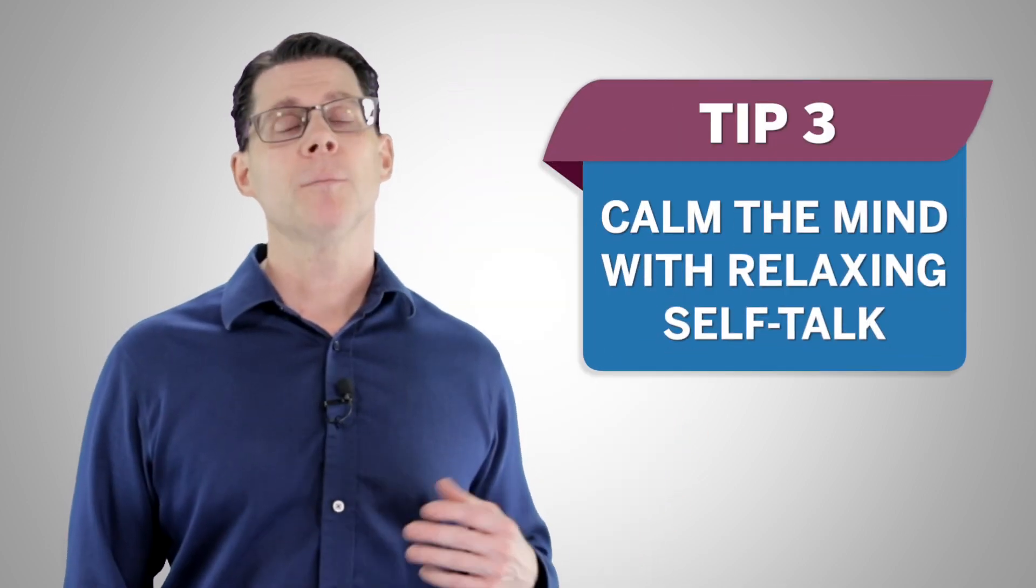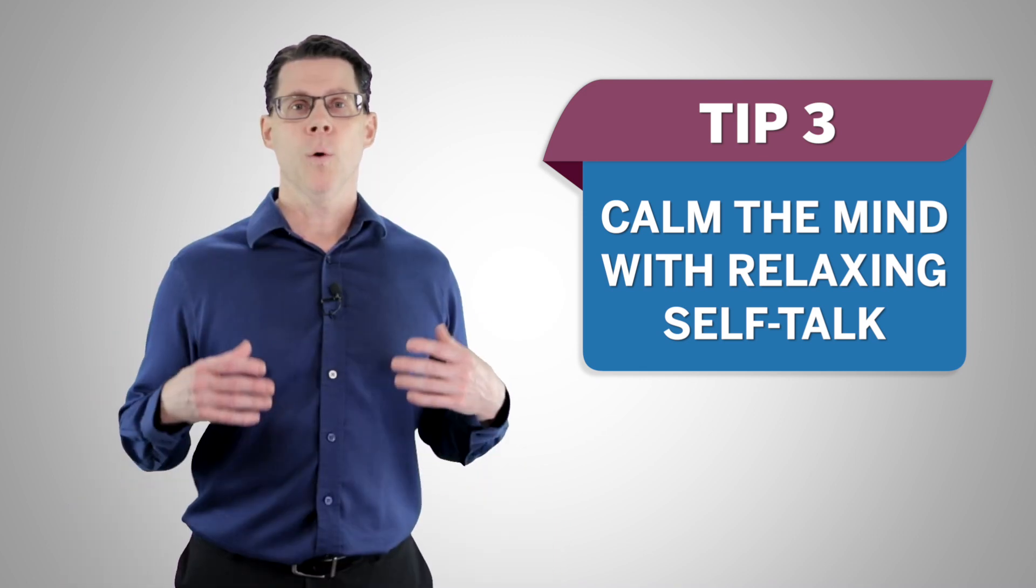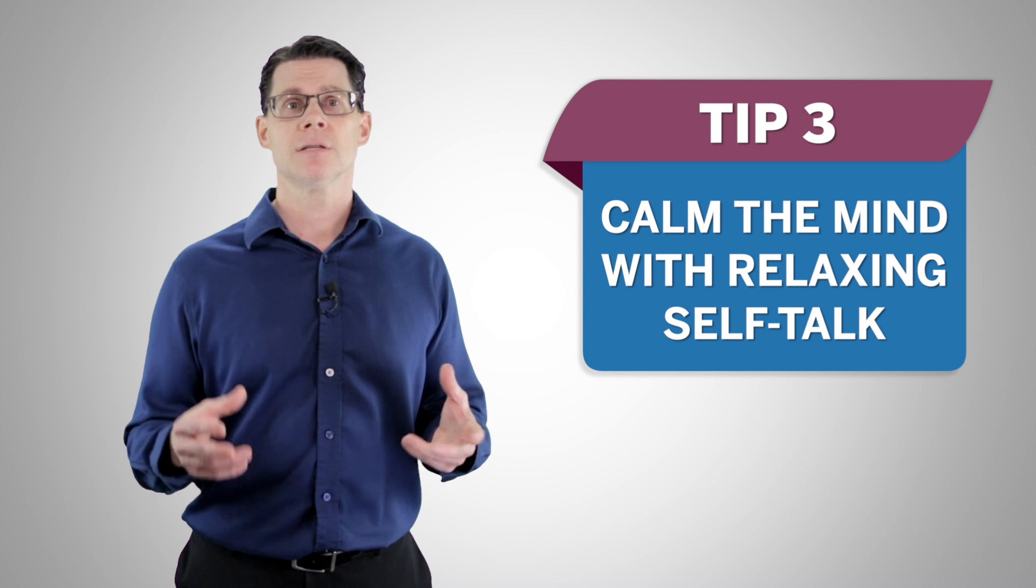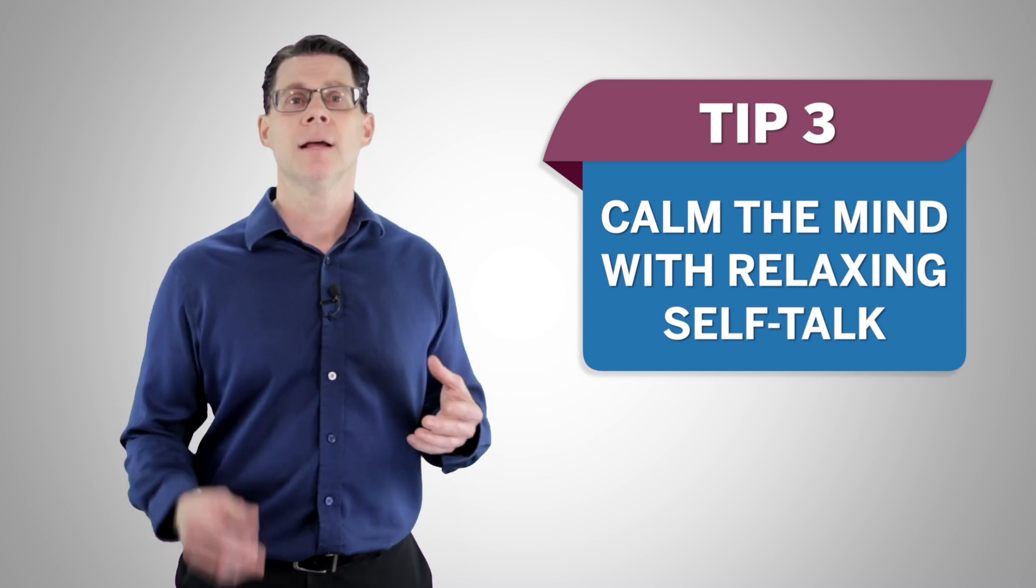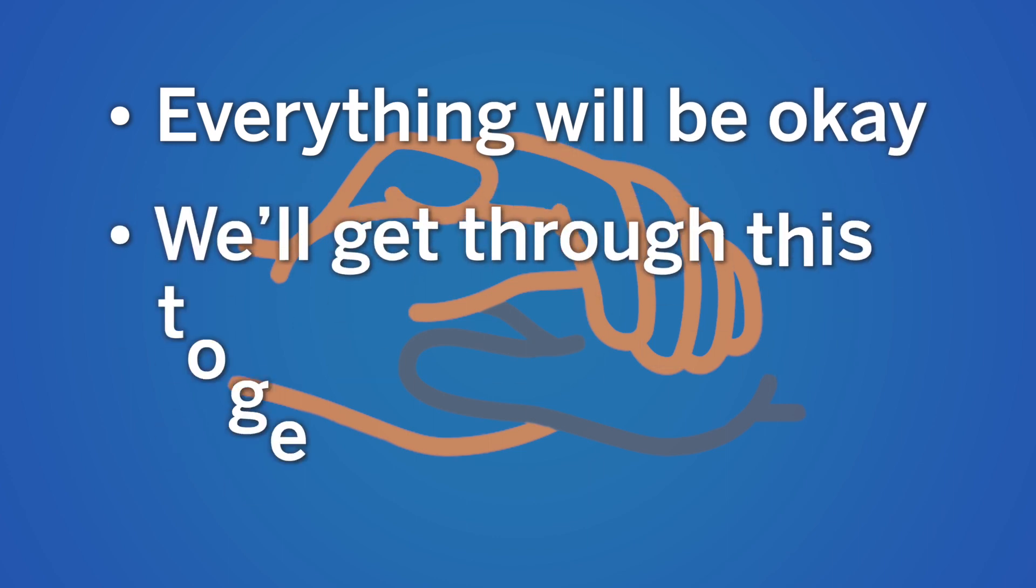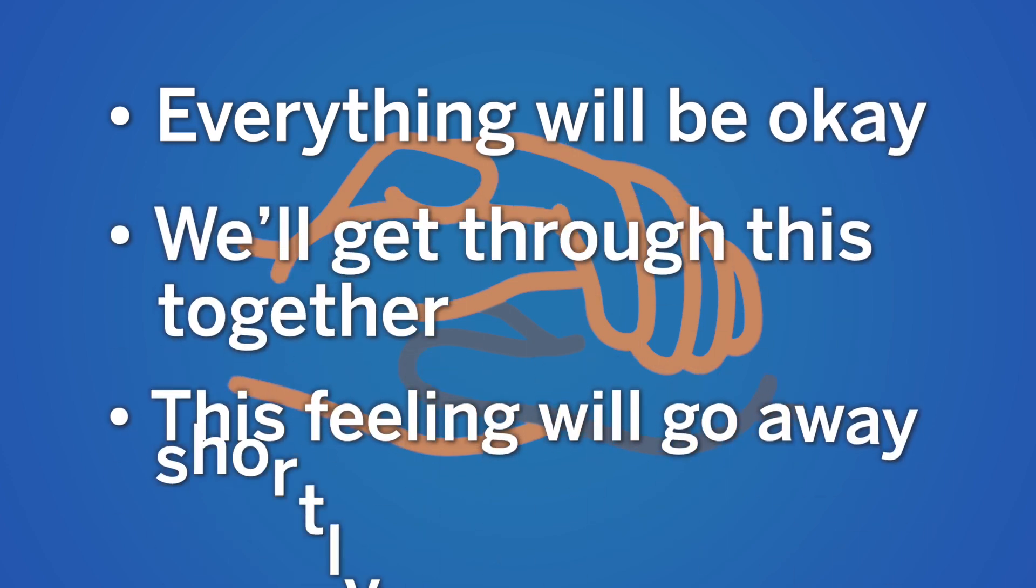For a third tip, you want to help your loved one calm their mind. One great way to do this is by using relaxing self-talk, which essentially means using a few relaxing phrases that'll help your loved one to calm their feelings of anxiety. And you have the advantage of knowing your loved one well, so it'll give you insight on what to say to help them to calm down. If you're interested in a few examples, I'd suggest using simple calming phrases such as, everything will be okay, we'll get through this together, this feeling will go away shortly.